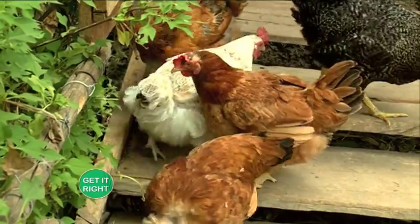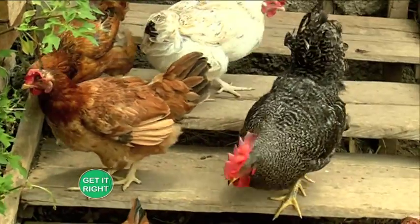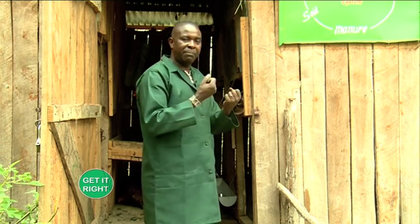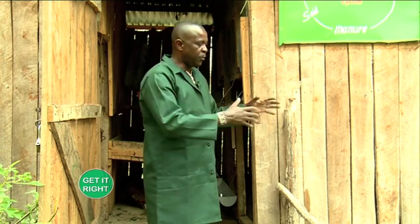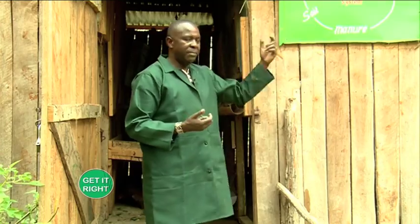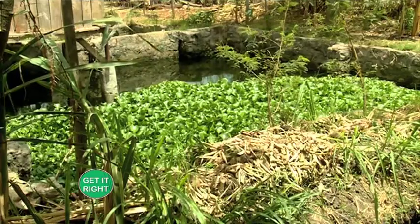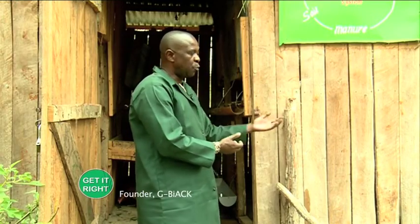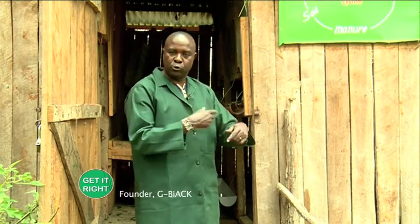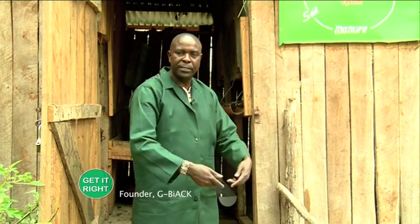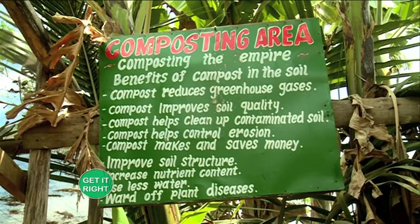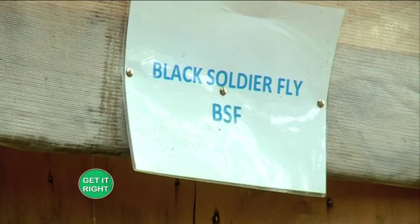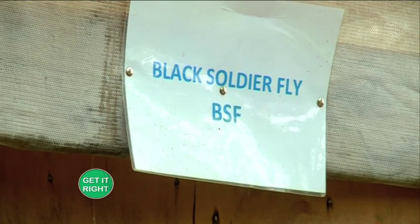The manure also fertilizes the water, and that water contains nutrients that are taken up by the hyacinth weed. We harvest the hyacinth weed and make compost with it. That water is also fertilized, so we use it in our farm to fertilize the soil as we do our irrigation.